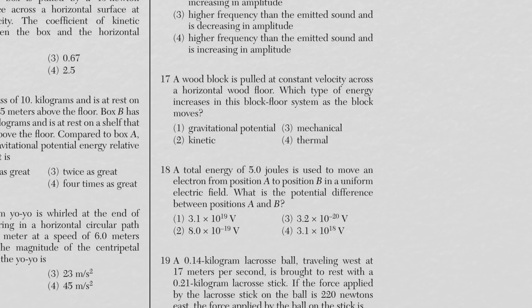Question 17: a wood block is pulled at constant velocity across a horizontal wood floor. Constant velocity means no change in KE, horizontal surface means no change in PE, and mechanical energy decreases due to friction. When two surfaces are in contact and moving, you get friction producing thermal energy — choice four.